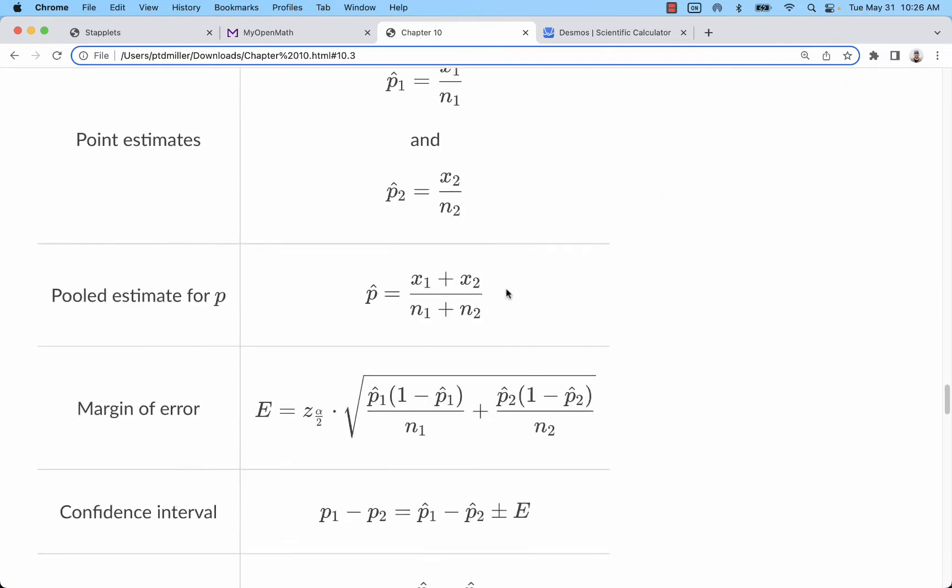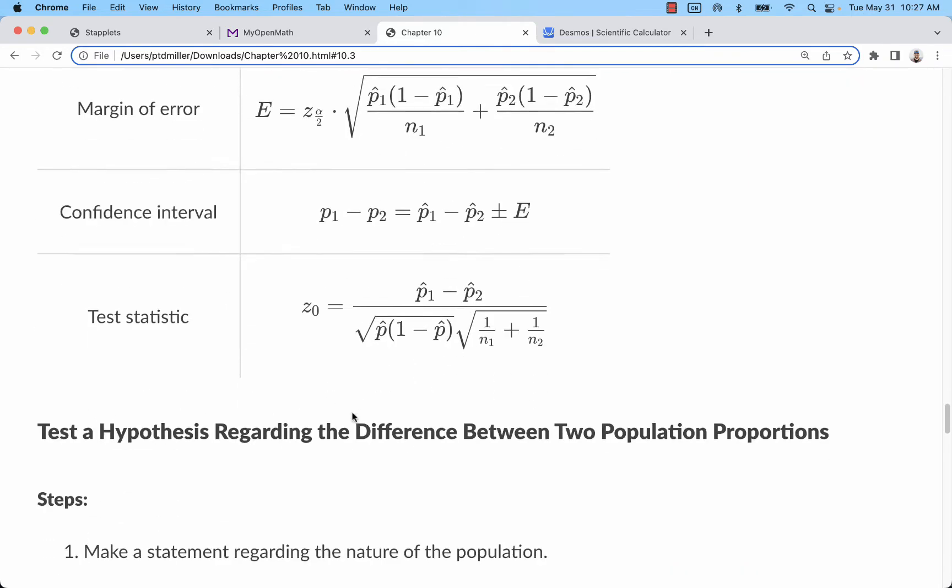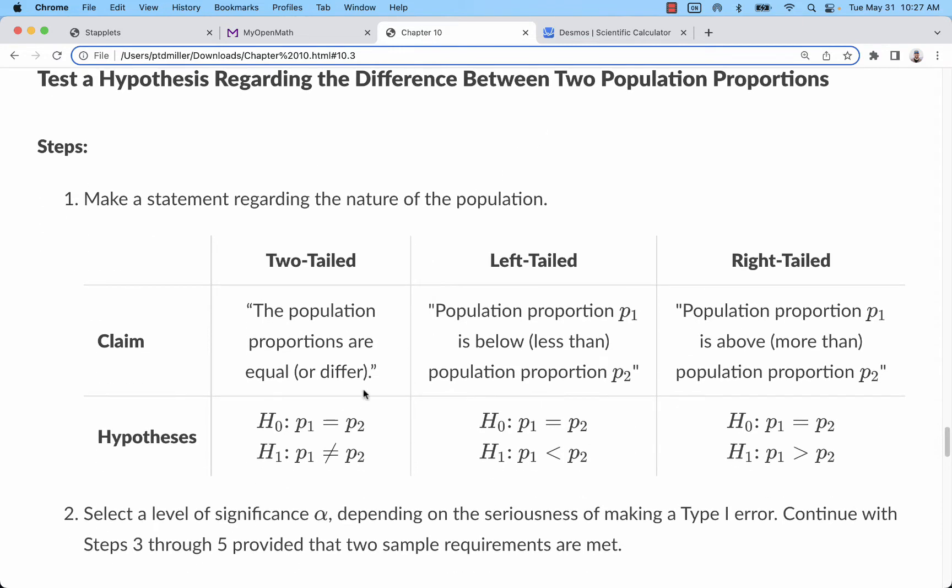You can do margin of error and confidence intervals, but we're going to focus on hypothesis tests. Here we have two population proportions are different or equal, population 1 proportion is below population 2 or reverse, population 1 is above population 2.